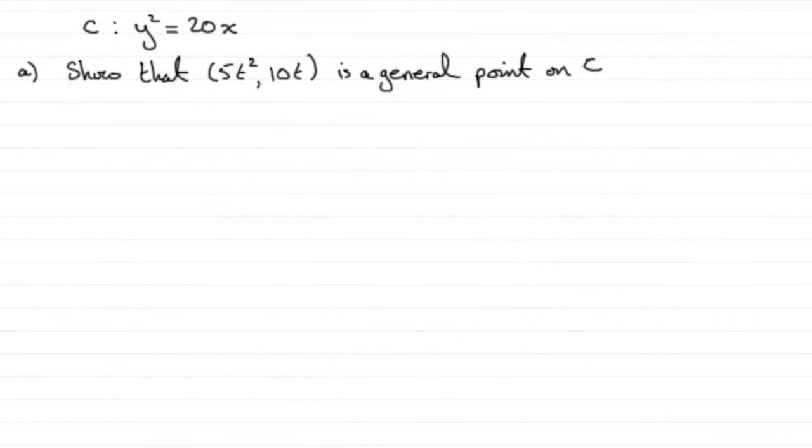Well, this is a nice easy one. We're given this curve C such that y squared equals 20x, and we've got to show that 5t squared, 10t is a general point on C.